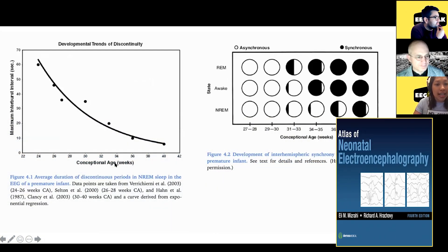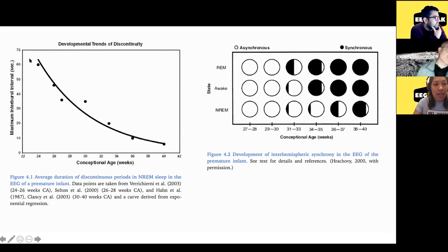So here on the x-axis, we have the conceptual age of the baby. And on the y-axis, we have what would be a reasonable interburst interval in seconds. So if you look at this, a 24-week, or if you were to do an EEG on them, could have an interburst interval of 60 seconds. Whereas a baby closer to the age of the baby we're looking at right now can have an interburst interval of around 10 seconds.